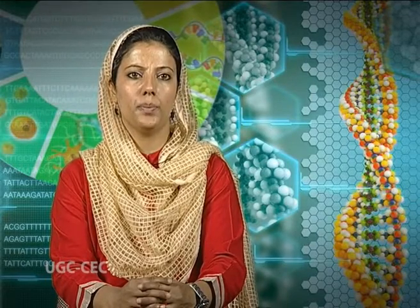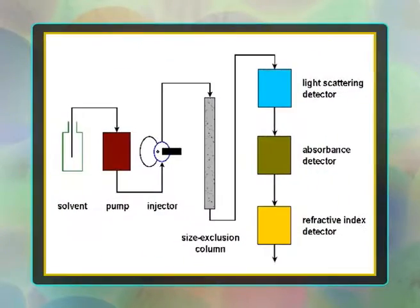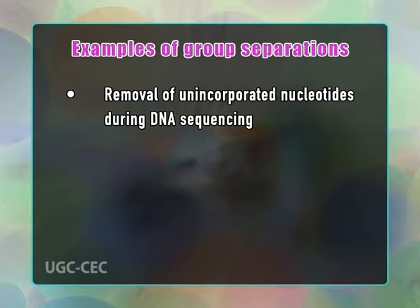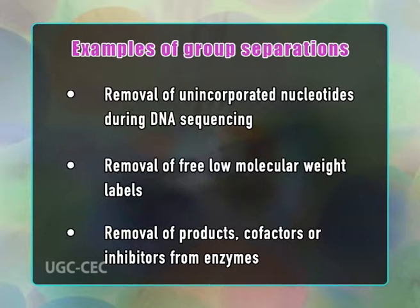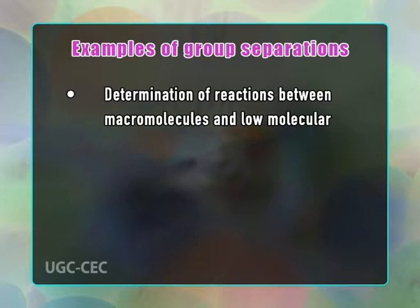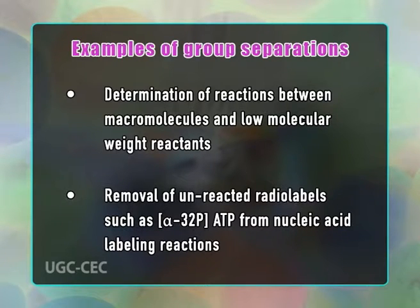Gel filtration is used for buffer exchange and desalting, or for group separation in which the sample is separated into two major groups. It is an easy-to-use method for separation of molecules with different molecular sizes using mild conditions. Gel filtration uses the size of molecules in solution to determine separation — spin columns have short media packing, so samples are separated by size. Large molecules travel out of the column with the void volume while smaller molecules, salts, etc. remain in the column longer. Examples of group separation include: removal of unincorporated nucleotides during DNA sequencing, removal of free low molecular weight labels, removal of products/cofactors/inhibitors from enzymes, determination of reaction between macromolecules and low molecular weight reactants, and removal of unreacted radiolabels such as α-32P-ATP from nucleic acid labelling reactions.